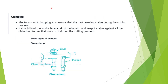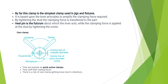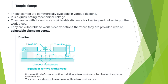Clamping keeps a part stable during cutting operations. The simplest clamp is the strap clamp, which is also a heel pin clamp. Types of clamps include: strap clamp, cam clamp, quick action clamp, toggle clamp, and clamping screw. An equalizer is a method of compensating variation in two workpieces by pivoting the clamp. The equalizer can extend to more than two workpieces.